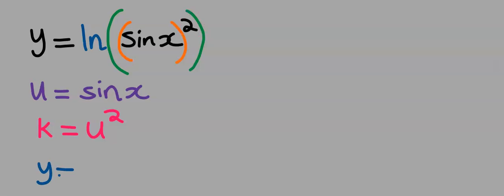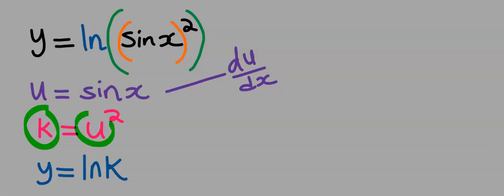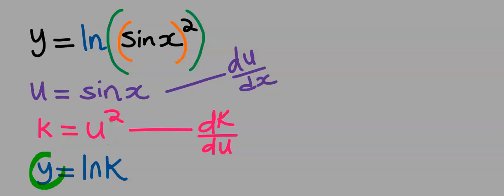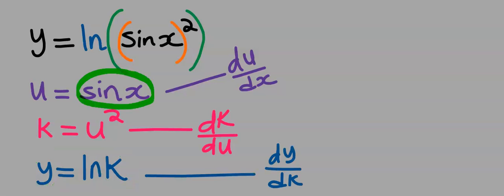Then y will be equal to ln(k). This is u and this is x, so we have du/dx. This is k and this is u, so we have dk/du. This is y and this is k, and you have dy/dk.